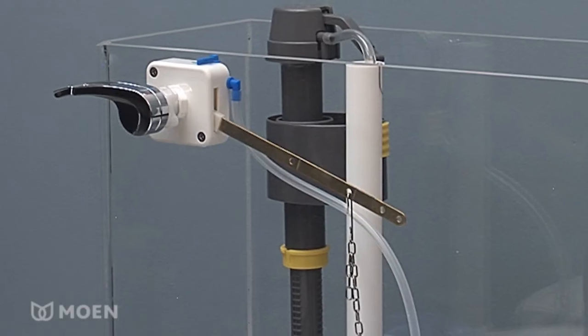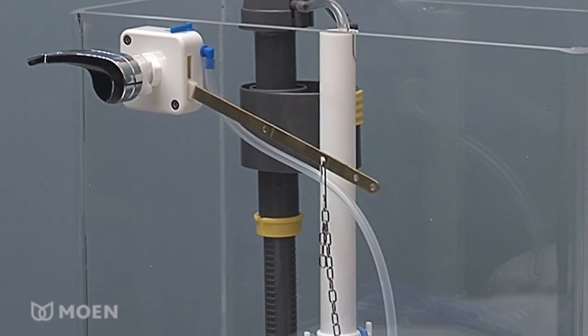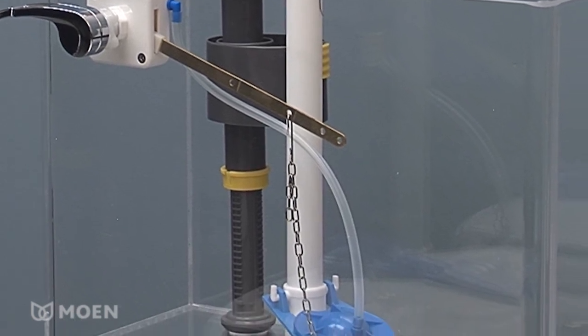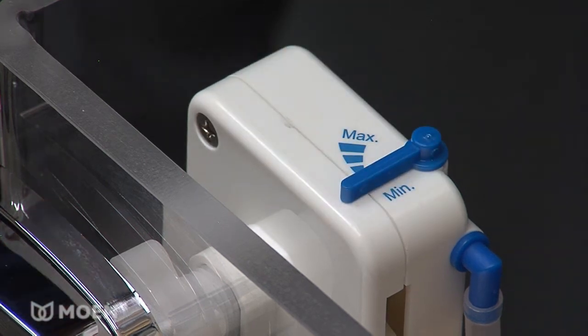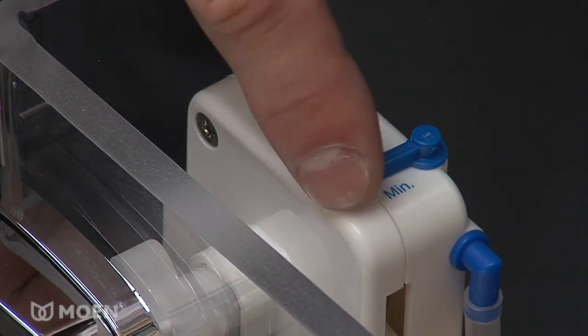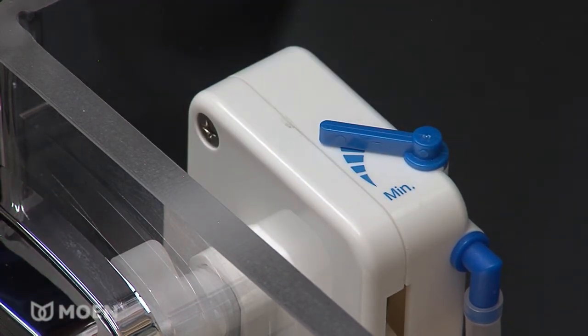The flush control box and flapper with air hose work together to regulate the speed of the flapper closing, determining how much water is used for each flush. The control lever on the top of the box will allow you to easily regulate the water flow for optimal performance and savings.